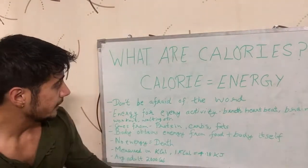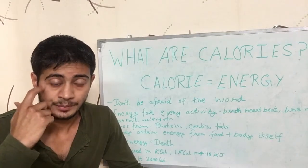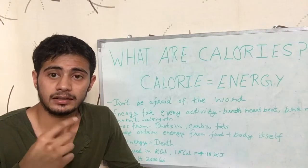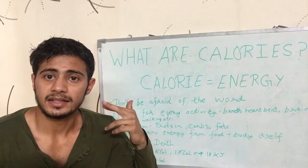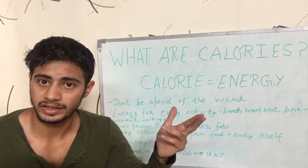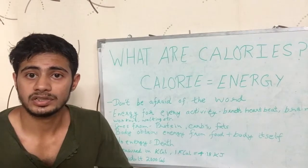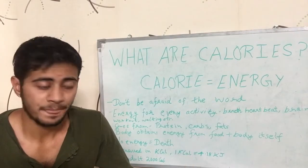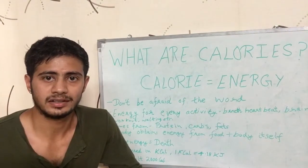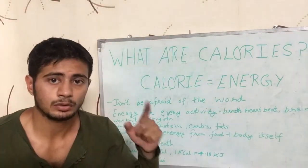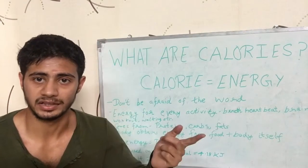The energy that our body possesses from the food we ate is used in a lot of activities — like breathing, which takes a lot of energy; the brain takes a lot of energy to think and do what it does; heartbeat takes energy; going to the gym to work out takes energy; and walking takes energy. Everything that you do, everything your body does, takes some energy.